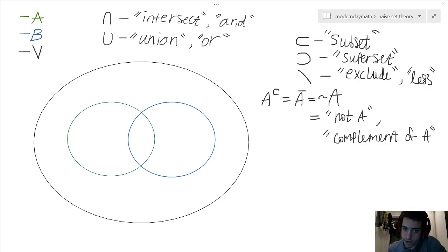Don't worry, I'm going to write down some examples in just a moment. And then when we talk about A to this seeming exponent of C, that's going to be the same as A with a bar above it, or this tilde A, which we can look at as NOT A, or the complement of A.